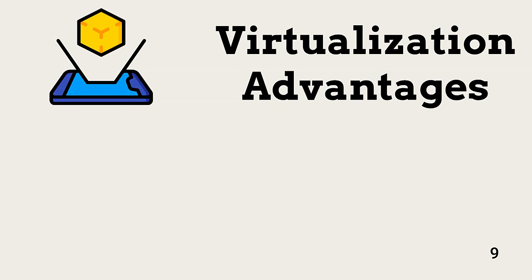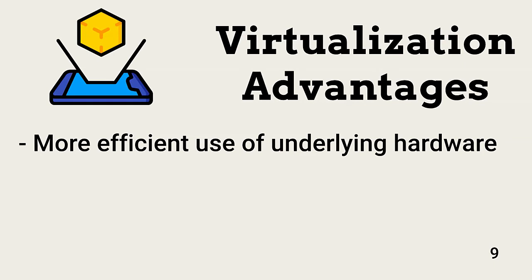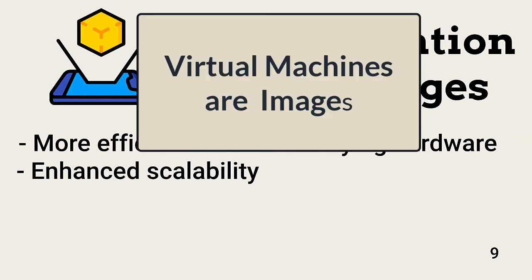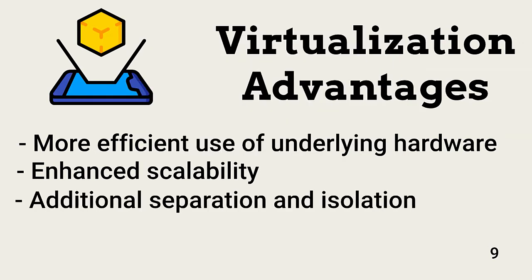There are three primary advantages of virtualization. The most attractive is more efficient use of hardware — placing multiple VMs on a hardware platform can make use of all available resources and reduce the number of hardware devices needed. Another essential business advantage is enhancing scalability: quickly bringing up a virtual machine adds an additional server when needed, since VMs are images that a hypervisor can quickly instantiate and place into production. Finally, better separation and isolation are possible — servers with the same required trust level can be virtualized on a single host, with virtual firewalls and switches segregating the VMs from the outside and from each other.